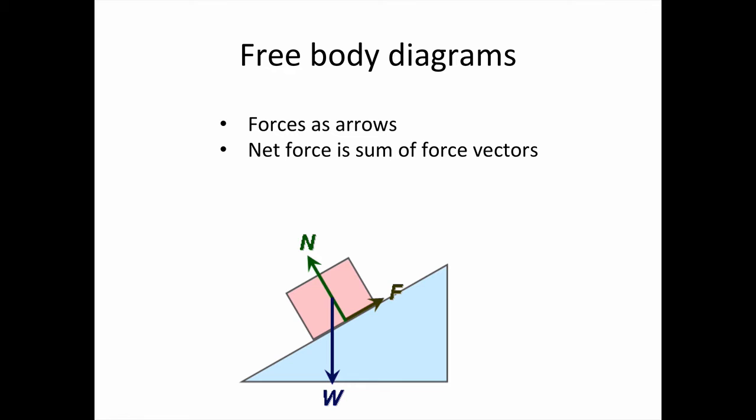The first section is about free body diagrams. For these, you need to draw all forces acting on a body as arrows. Then the net, or sum force, can be found by adding the vectors head to tail. A shortcut is you can take horizontal and vertical forces separately because they're independent.